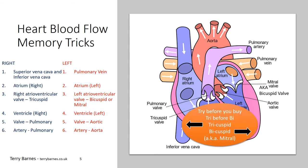Next, the tricuspid and bicuspid valves. The 'tri' has three cusps and the 'bi' has two cusps. The bi is also known as the mitral valve. A handy memory trick: 'try before you buy.' This helps you remember which side of the heart each valve is on — 'try' (tricuspid) comes first on the right-hand side, and 'bi' (bicuspid) comes second on the left-hand side.